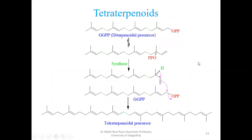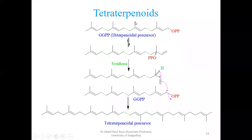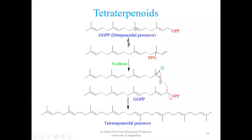Tetraterpenoids — we have just about one and a half minutes remaining, so once the session is over we shall log in again for 20 more minutes to finish today's lecture. Tetraterpenoids have a 20-carbon precursor: one 5-carbon unit, another 5, another 5, another 5 — so 5+5+5+5 = 20 carbons total.